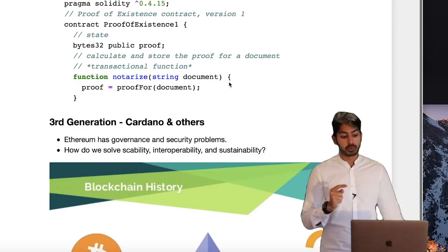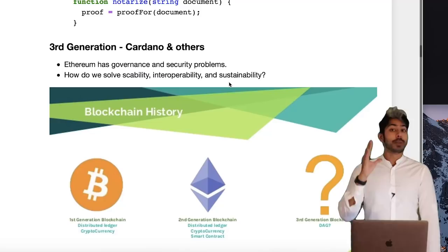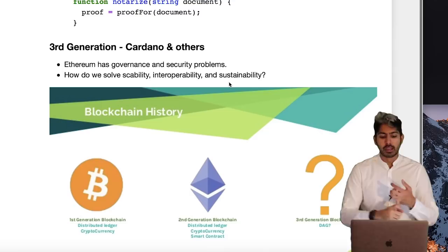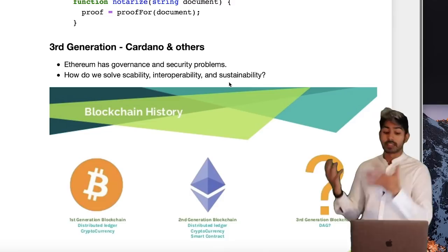But Ethereum, as awesome as it is, has its own problems. There are governance problems — the hard fork and the soft fork — security problems, and scalability issues. How do we solve scalability? How do we solve interoperability? And how do we solve sustainability? I'm going to go into each of these three points.